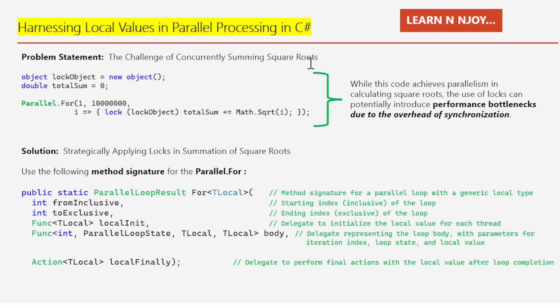The challenge is concurrently summing square roots. This code snippet uses the Parallel.For loop to calculate the square root of numbers from 1 to 1 million in parallel. First, I've created an instance of an object called lock object, then declared a double variable total sum initialized to zero to store the cumulative sum of square roots as the loop progresses.